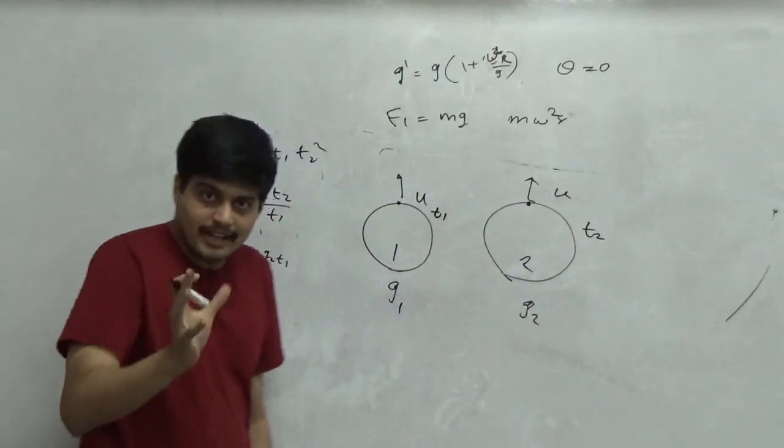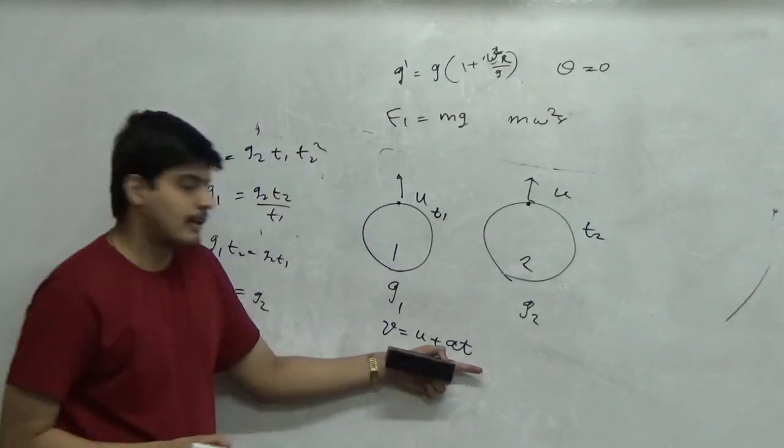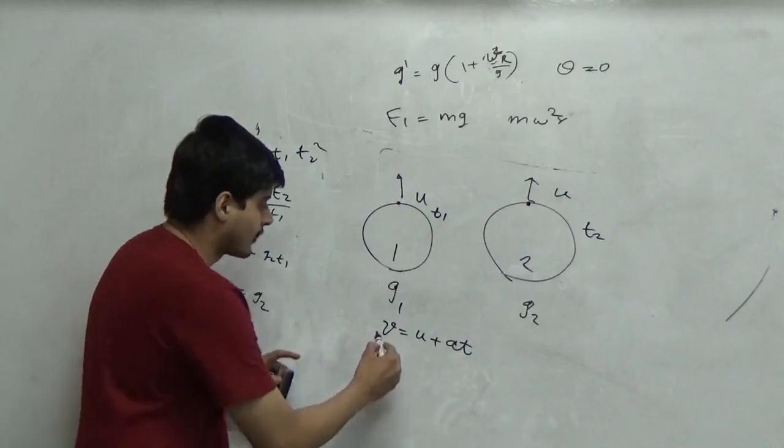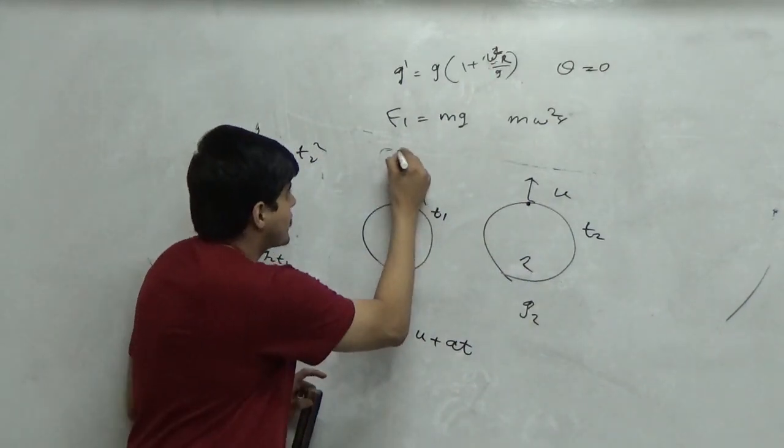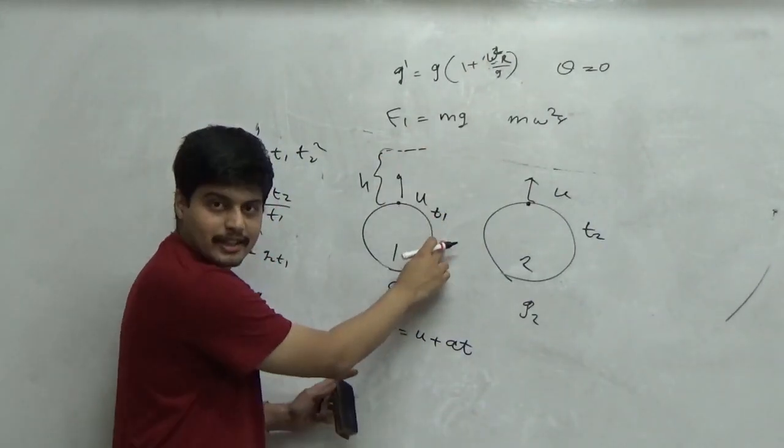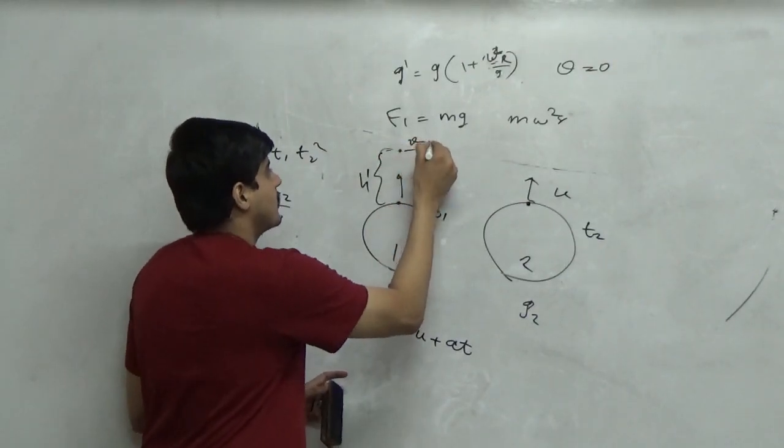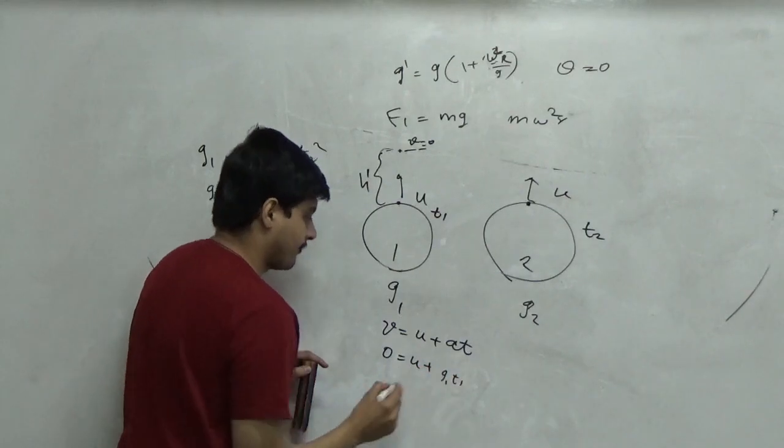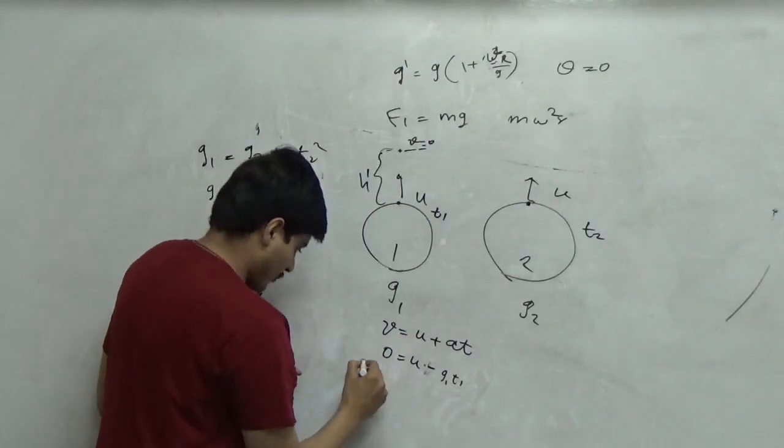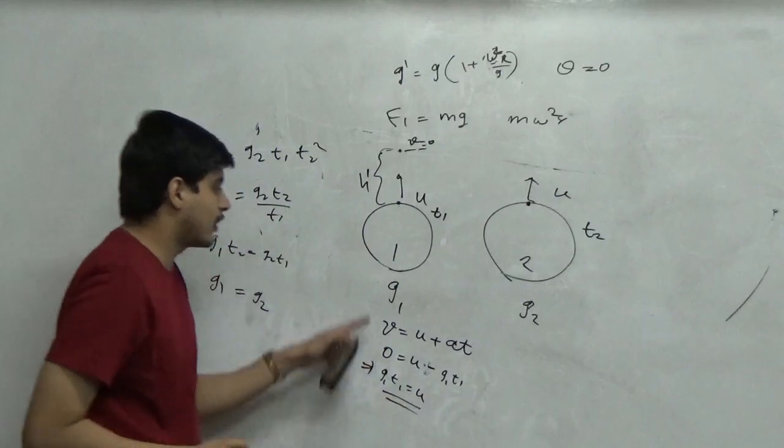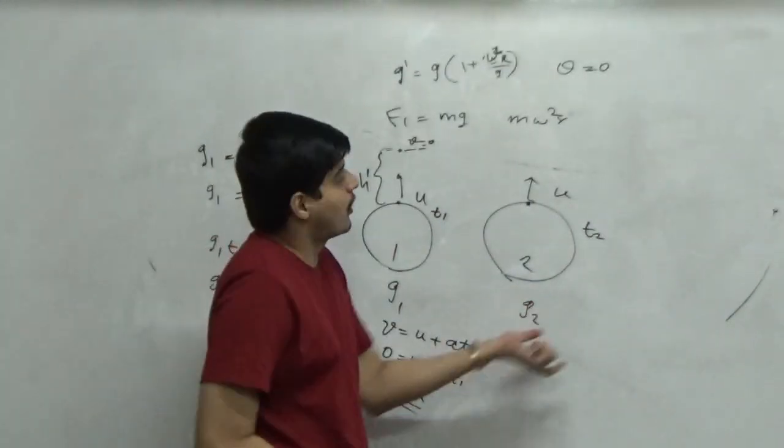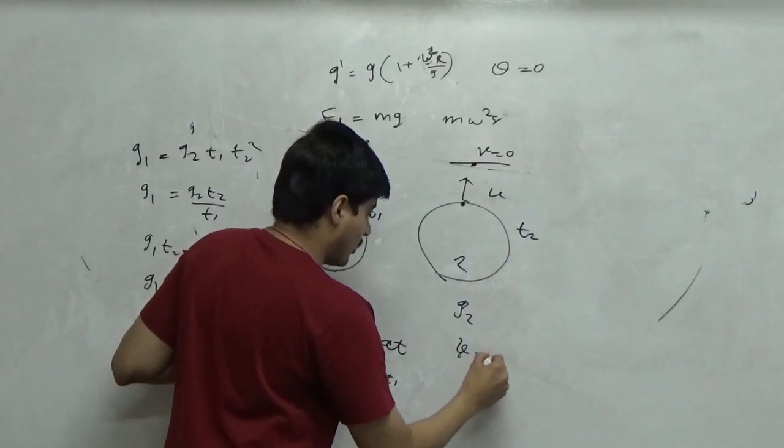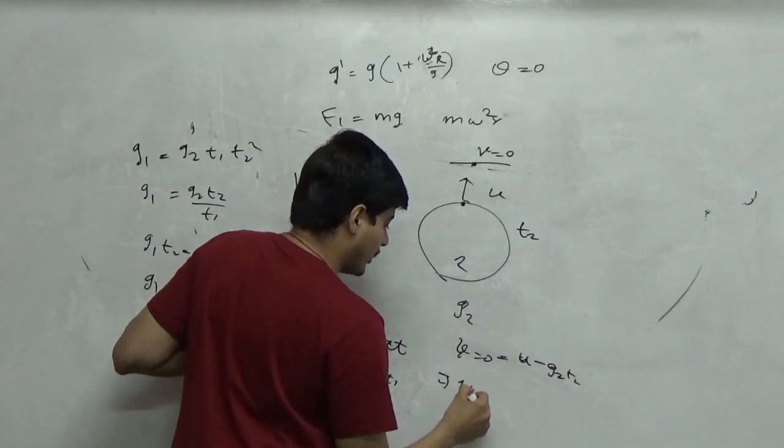To solve this question very simply, the equation of velocity change v equal to u plus at is coordinate frame invariant. On planet 1 the velocity must have become 0 in t1, which means 0 equals u minus g1 t1. Which means g1 t1 is equal to u. On the other planet, v equal to 0 equal to u minus g2 t2, which means g2 t2 is also equal to u.